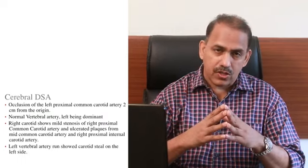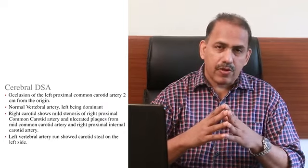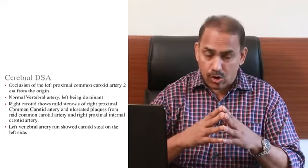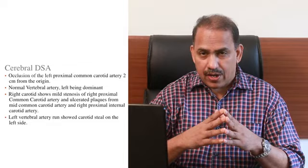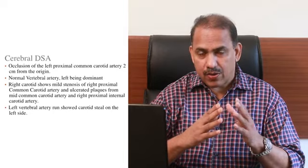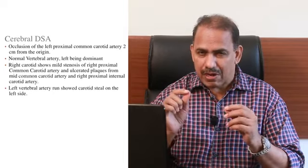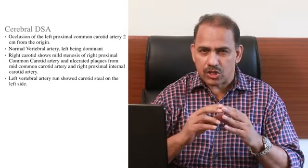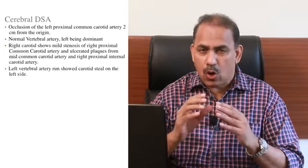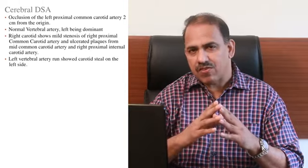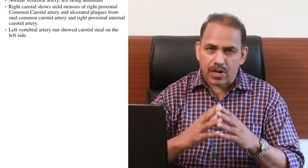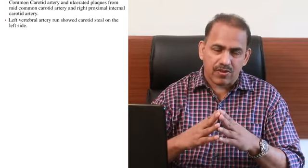The left vertebral artery was dominant. On the right brachiocephalic trunk, there was mild stenosis at the origin, and there were long-segment ulcerated plaques in the right distal common carotid as well as the proximal internal carotid artery.